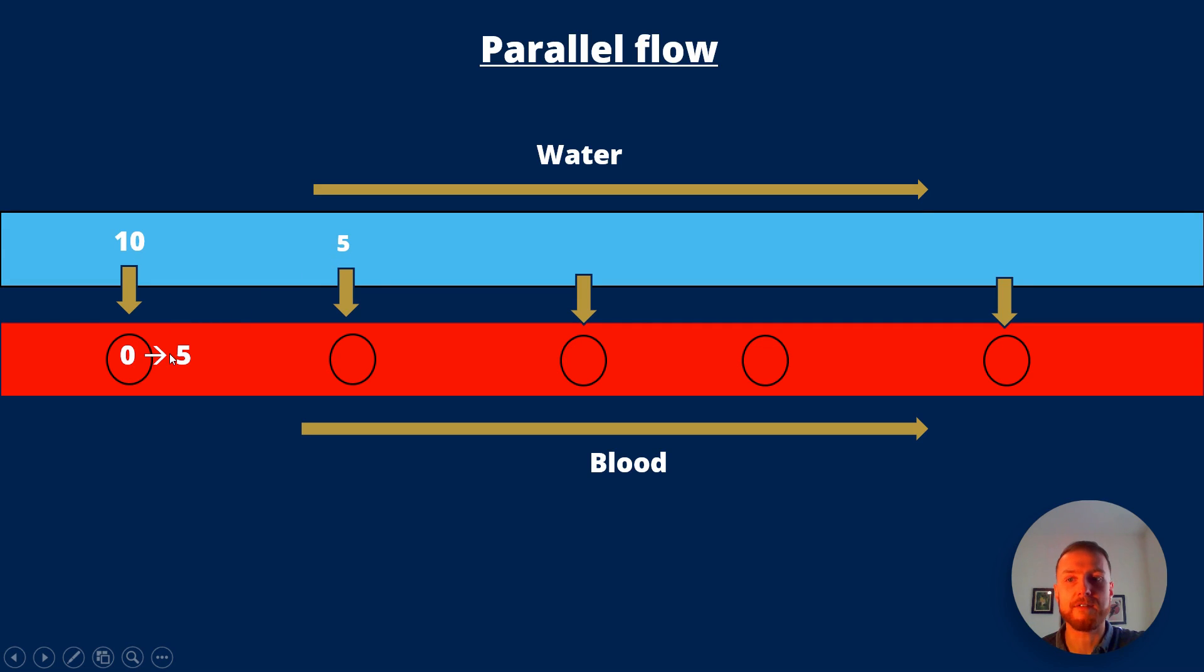So we'd have five in the water five in the blood and that would continue. Well at the next stage we've got five in the water and five in the blood. So it's already at equilibrium so no change. Again already at equilibrium and that continues. So in total we've absorbed 50 percent of the oxygen from the water using parallel flow. Not bad but not great either.